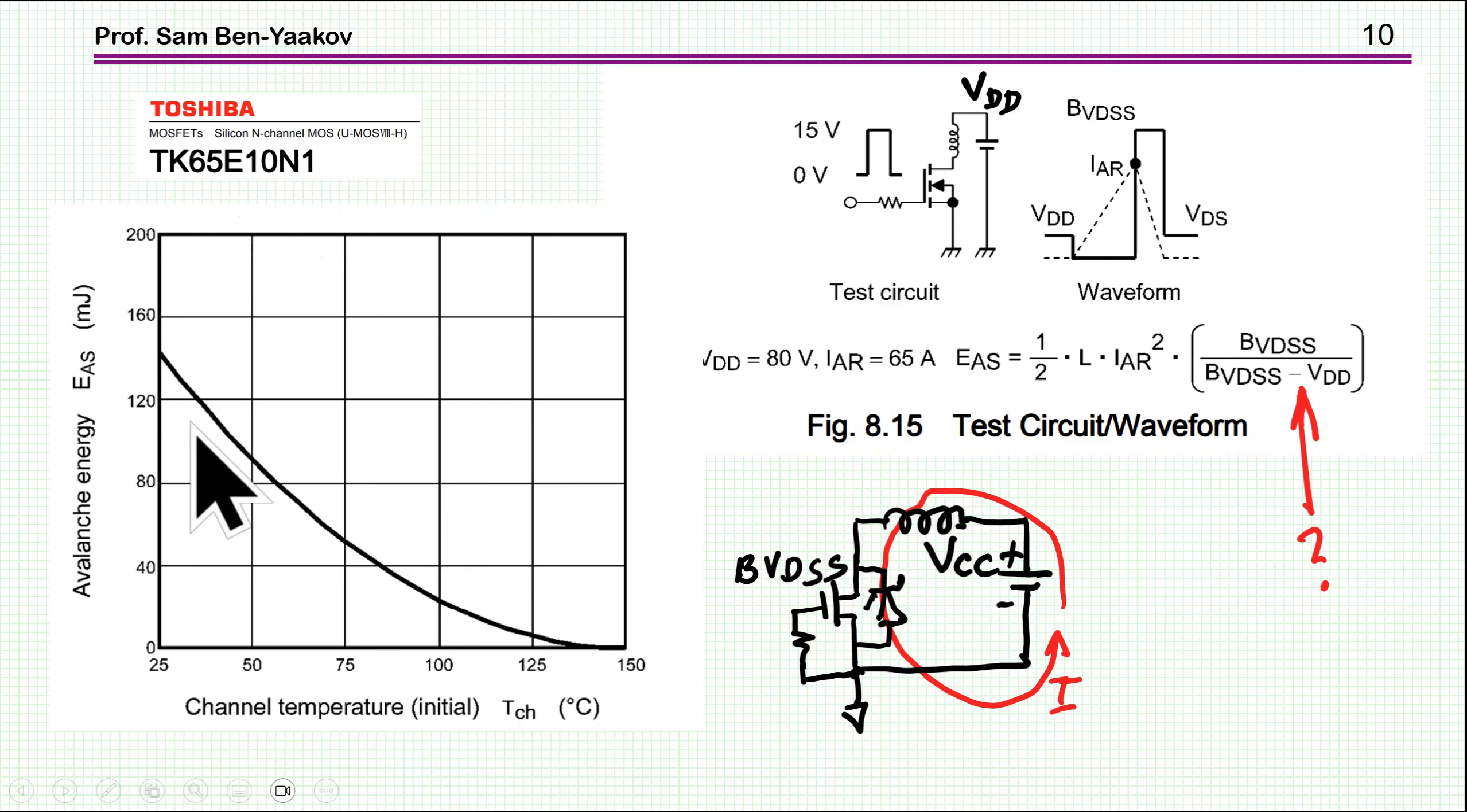This information is given by Toshiba for a similar transistor, and they are giving the dependence on temperature. At 25 degrees, the capability is to absorb something like 140 millijoules. But as the case temperature is going up, the ability to absorb goes down. This is the initial temperature before the pulse. So if temperature goes up, the ability to absorb goes down to really low value when the temperature is high.